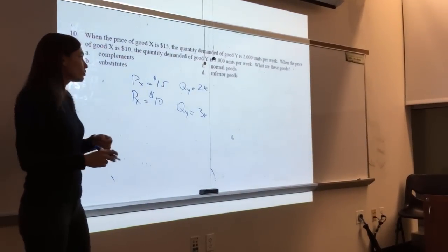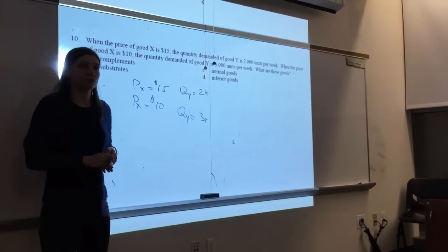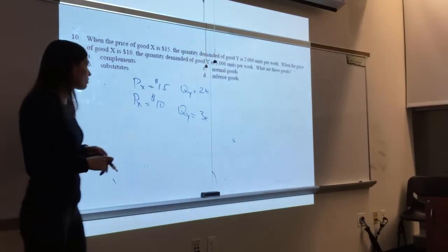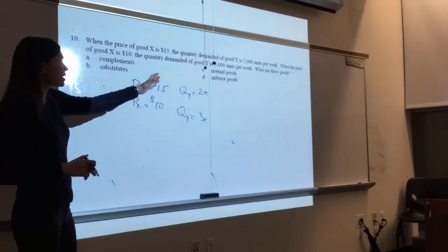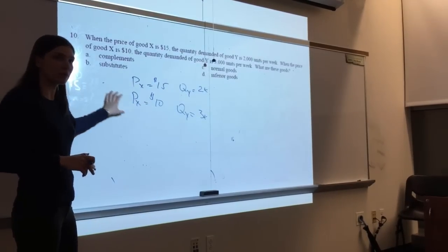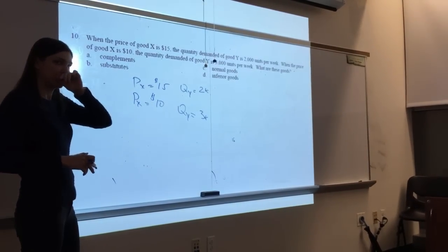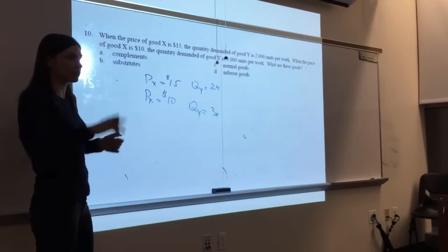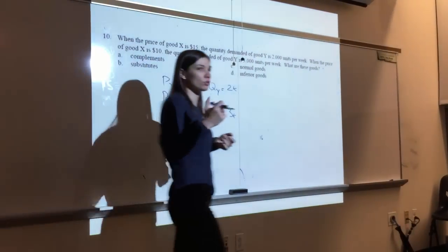What can we conclude about those two goods? Substitutes. Are they? What happens here? First of all, can we say whether they're normal or inferior by having this information? Normal. All right, because normal or inferior refers to the income elasticity.